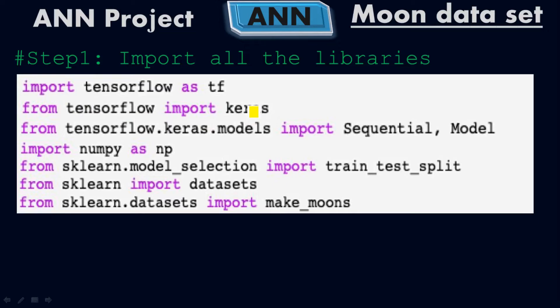Keras is the sub-module of the TensorFlow library, and 'models' is the sub-module of Keras. From tensorflow.keras.models we import Sequential and Model. We have two types of model: the sequential model and the functional model. In the sequential model, layers are arranged in a sequence — we are not talking about sequential data where RNNs are used.